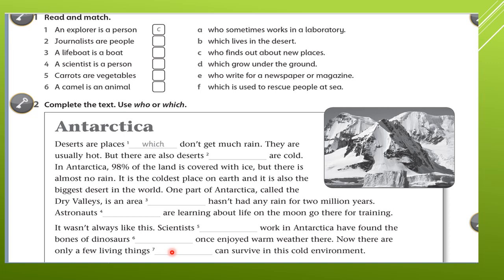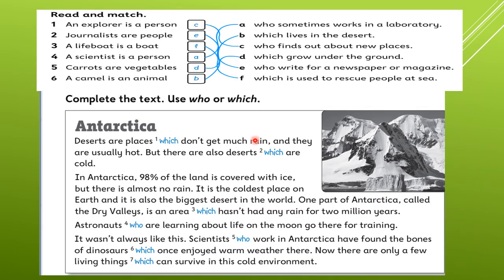Here are the answers. Explorer is a person with C. Journalists are people with E. A lifeboat is a boat with F — to rescue, to protect. Scientist is a person with A, he works in the lab. Carrots and vegetables with D. A camel is an animal with B, which lives in the desert.